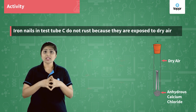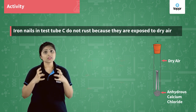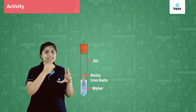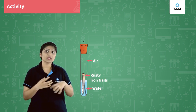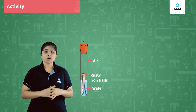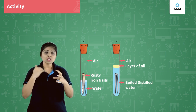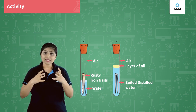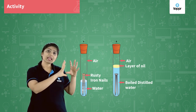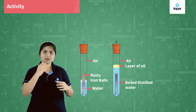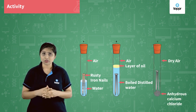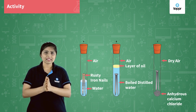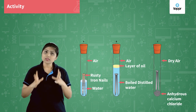This means that for iron's corrosion, oxygen and moisture both are required. In test tube A, fresh water has H₂O and also oxygen dissolved in it. In test tube B, the boiled water has had its dissolved oxygen evaporated, and the oil layer on top prevents outer oxygen from entering — so it only has H₂O. In test tube C, we have oxygen but no moisture, because the anhydrous calcium chloride absorbs all the moisture present in the test tube. This indicates that for iron's rusting, oxygen and moisture both are required.